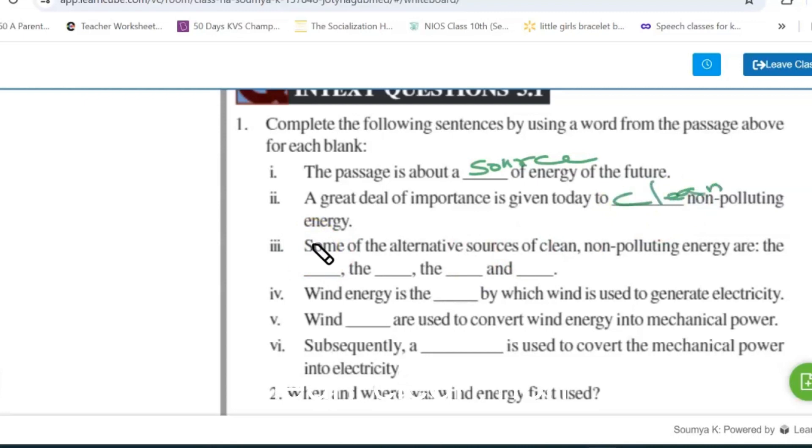Some of the alternative sources of clean, non-polluting energy are - the examples are given: sun for solar energy, wind, tides give the tidal energy, and biogas.